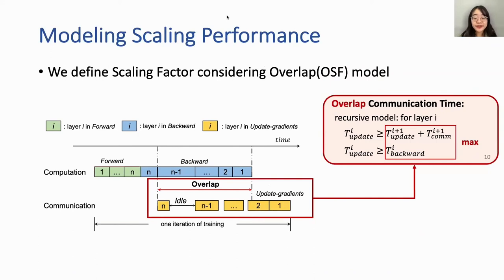Here we define the Scaling Factor Considering Overlap model, simplified to OSF model. The key to estimating overlap communication time is our recursive model: we always take the max time between the end time of backward computation and the end time of the previous layer's communication, plus the start time of new layer communication launch. In this way, partial communication can be overlapped by computation.